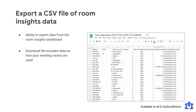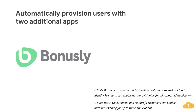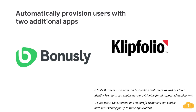To find out more about how your meeting rooms are being used, check out the Help Center. We're adding auto-provisioning support for two new apps this month, Bonusly and Clipfolio. When auto-provisioning is enabled for a supported third-party app, any users created, modified, or deleted in G Suite are then automatically added, edited, or deleted in the third-party app also. For more information on how to set up auto-provisioning, check out the Help Center.